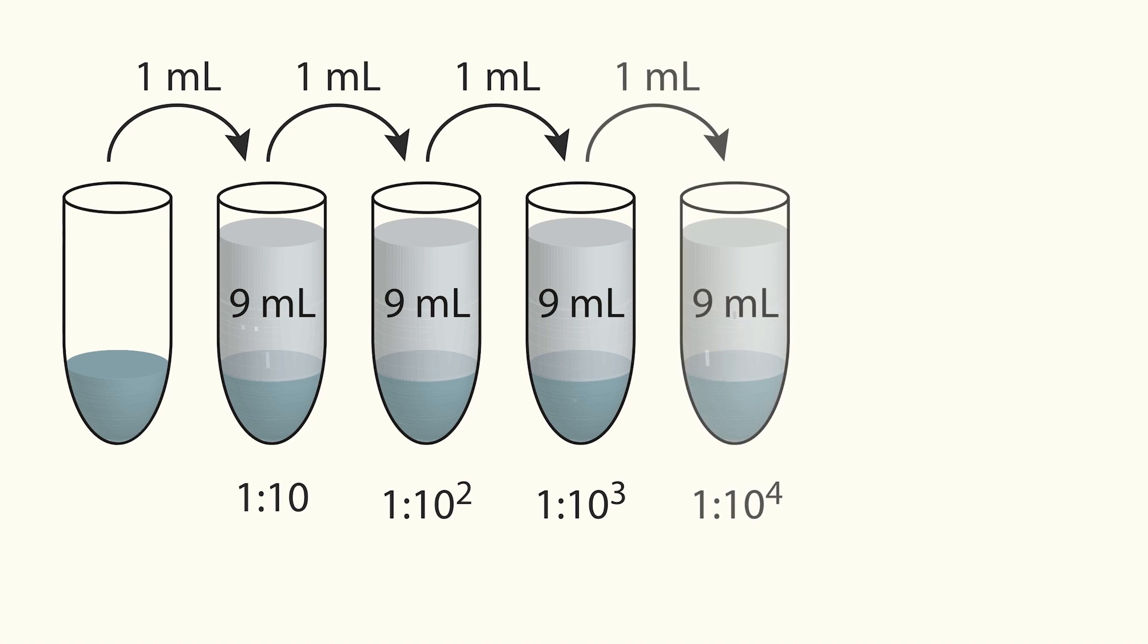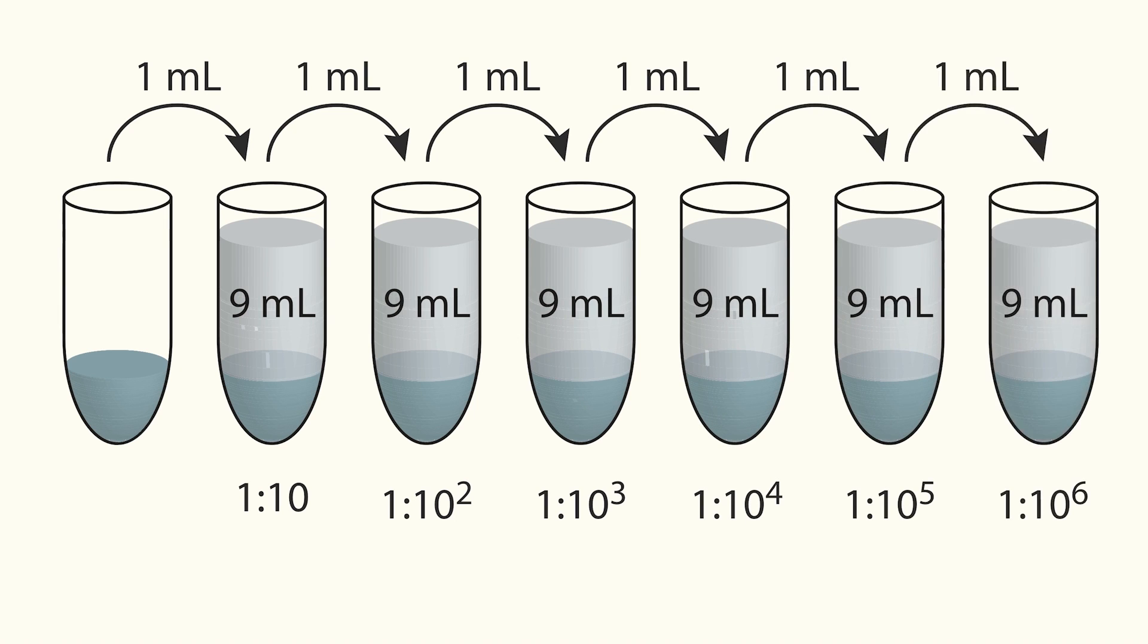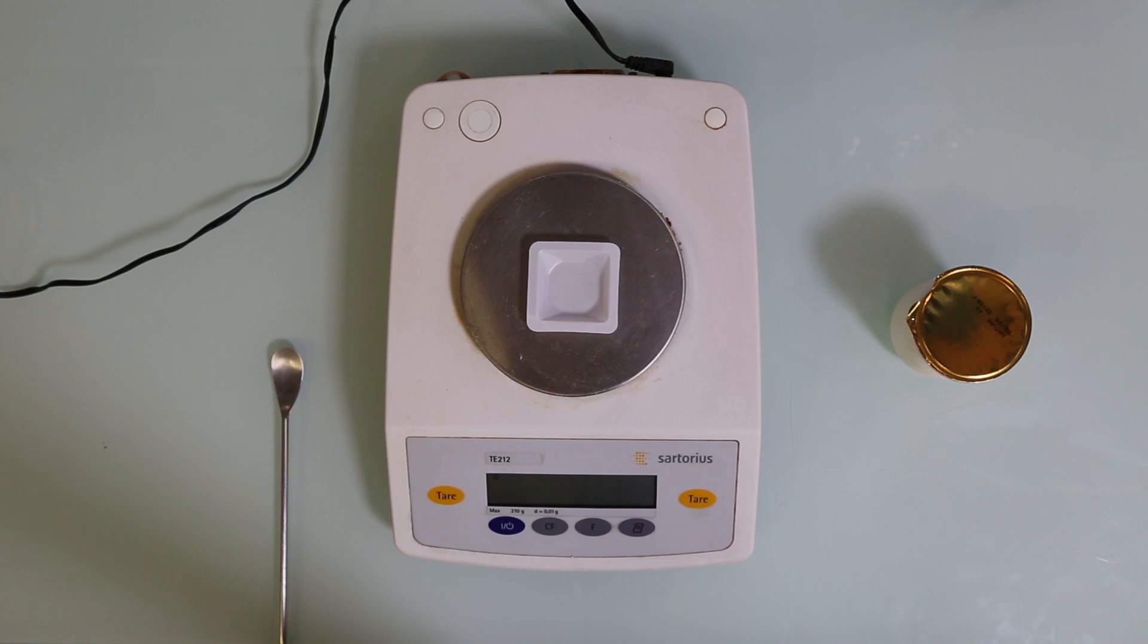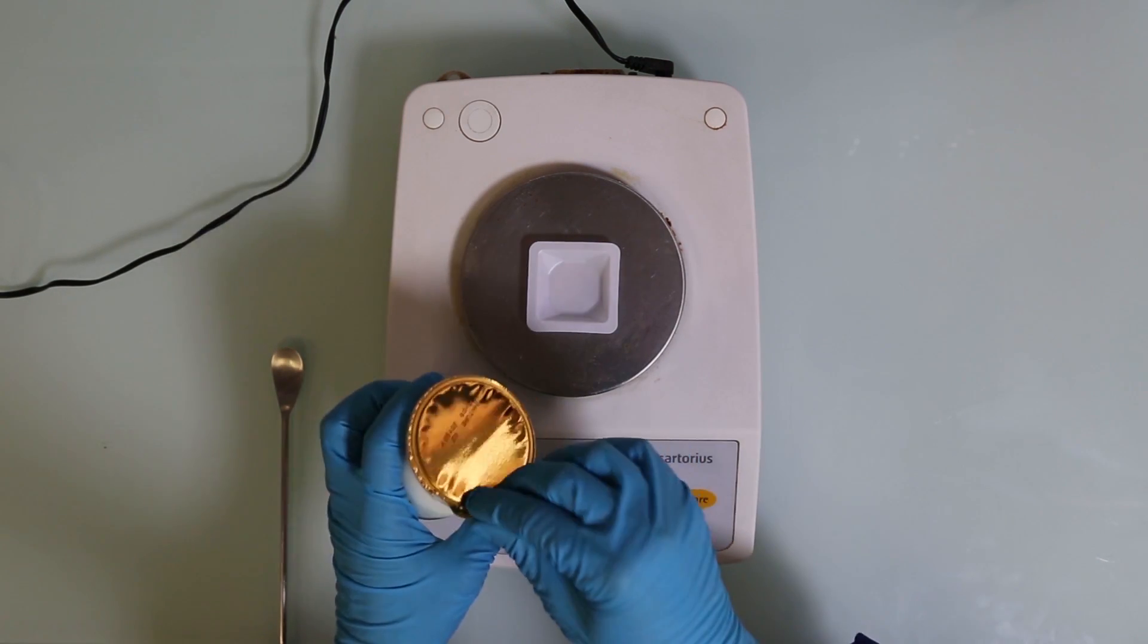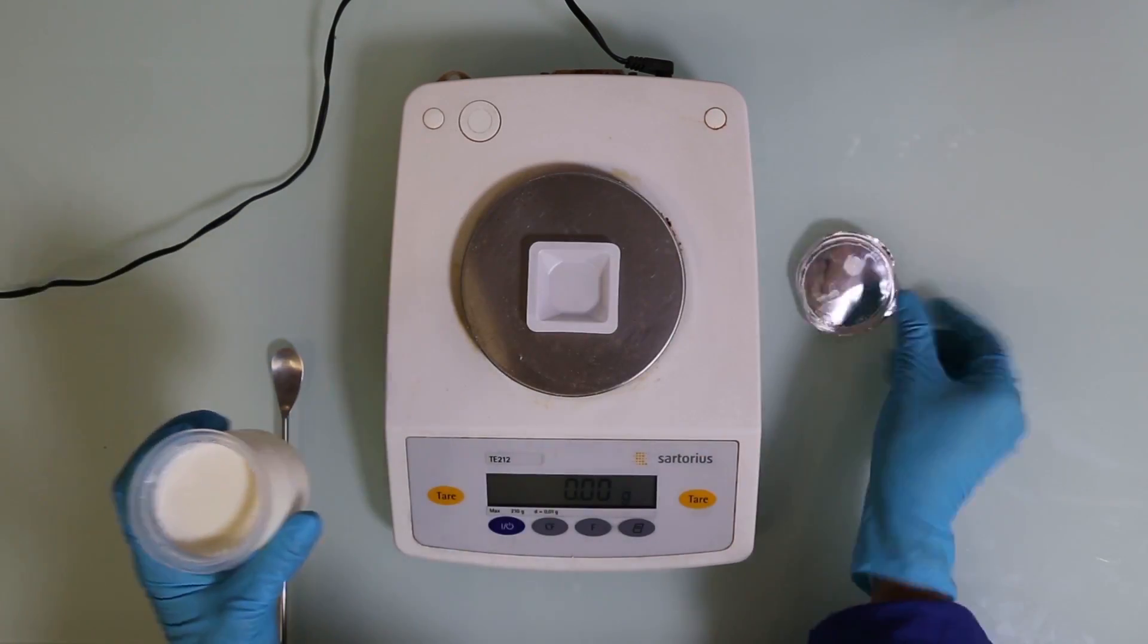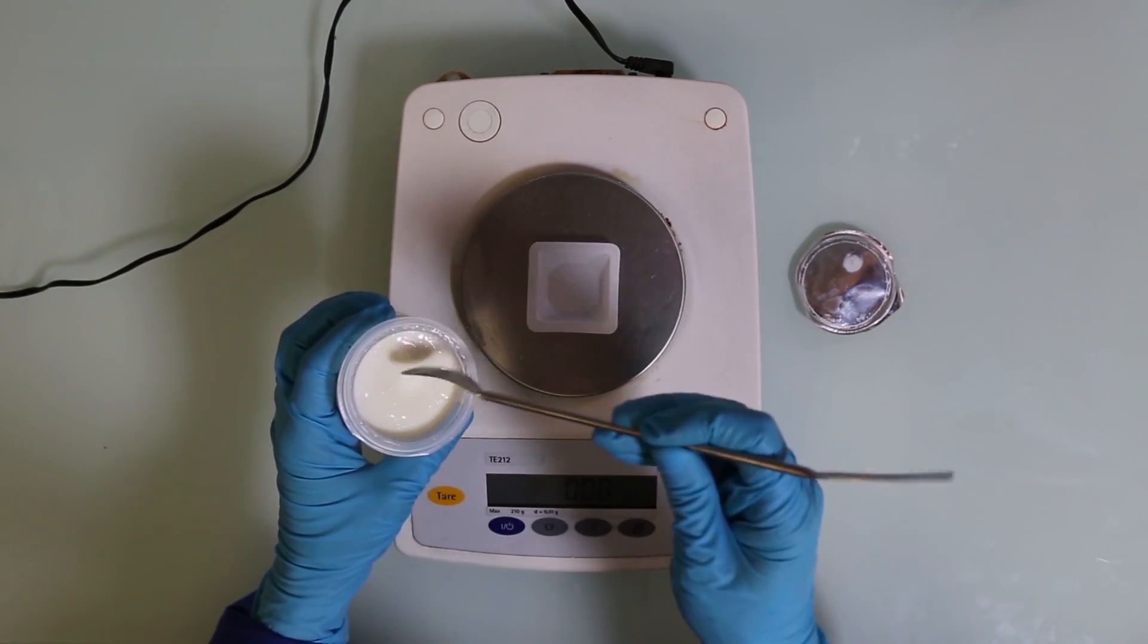If you do that six times, you have 1 in a million dilution that you had wanted, but using much less water. First, let's weigh out 1 gram of yogurt and mix it with 10 milliliters of water. That's our first 1 to 10 dilution.